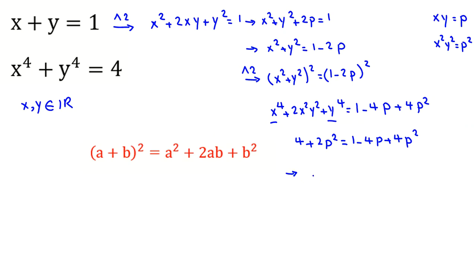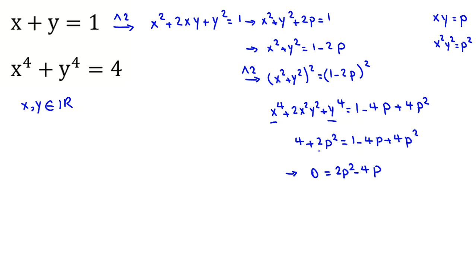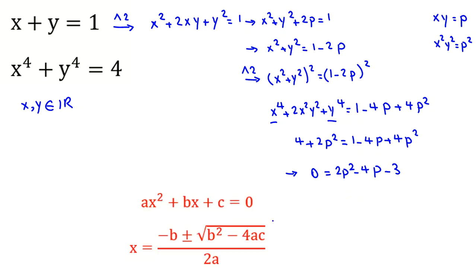If we take all terms to the right-hand side, we get 0 equals 2p squared minus 4p minus 3. Now we want to calculate p. We use the quadratic formula here, where a is 2, b is negative 4, and c is negative 3.